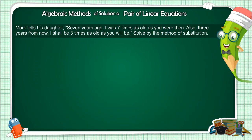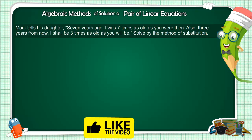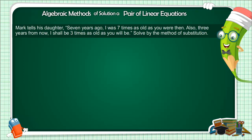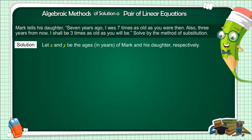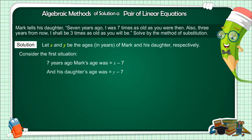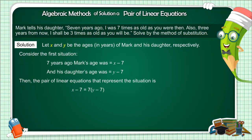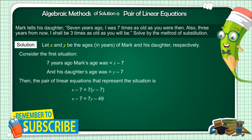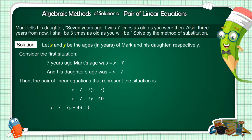Let's see another example. Amar tells his daughter that 7 years ago he was 7 times as old as his daughter, and 3 years from now his age will be 3 times that of his daughter. We have to find out by the substitution method how old Amar and his daughter are. Let the present age of Amar be x years and his daughter's age be y years. 7 years ago, Amar's age was x minus 7 and his daughter's age was y minus 7. Since Amar was 7 times his daughter's age, the equation is: x minus 7 equals 7(y minus 7), giving us x minus 7y plus 42 equals 0 as our first equation.